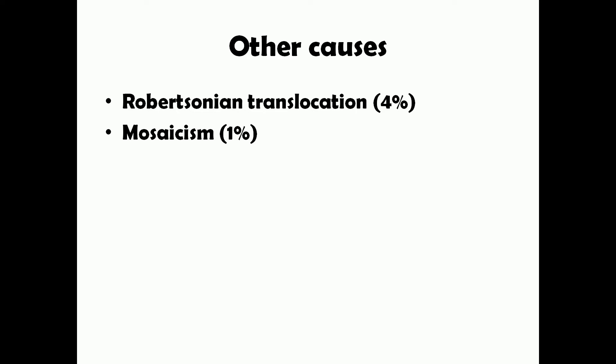Mental retardation and many features of Down syndrome are more common in trisomy 21. In cases of Robertsonian translocation or mosaicism, the child has a higher chance of surviving and living a more normal life. Maternal age is also not associated with these two rarer causes. If you want a detailed explanation of either, please comment below.